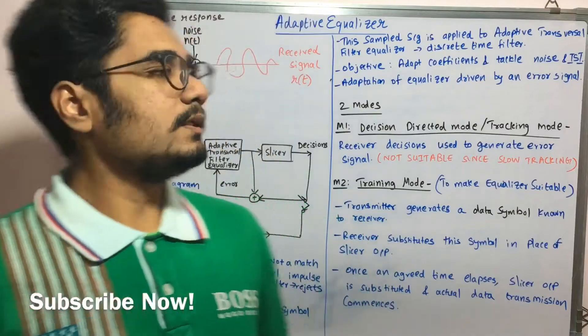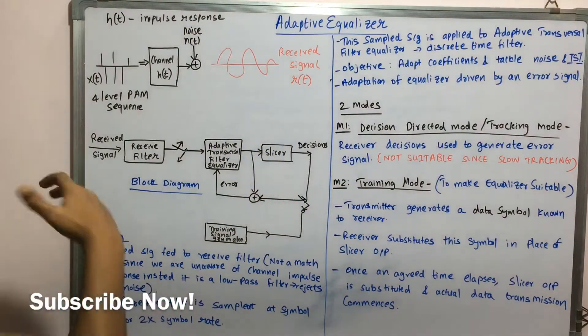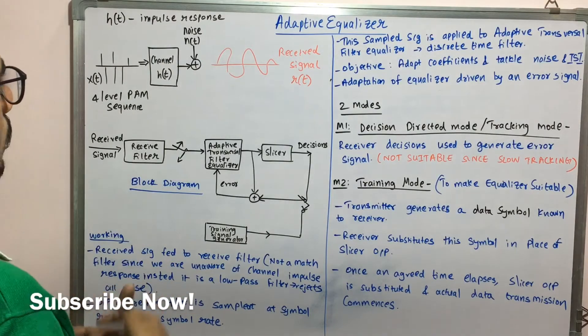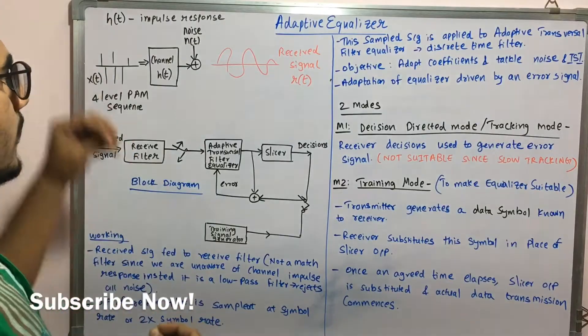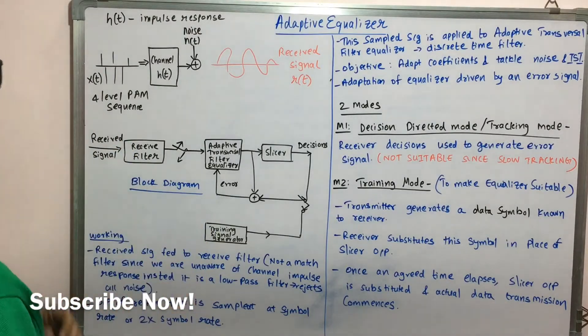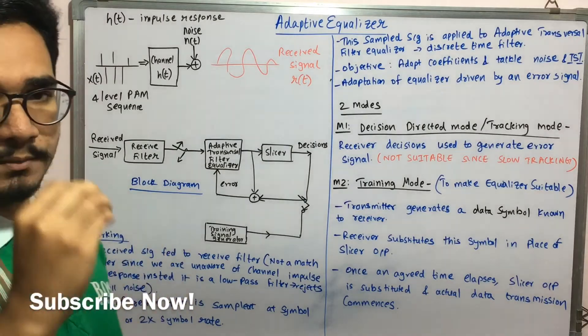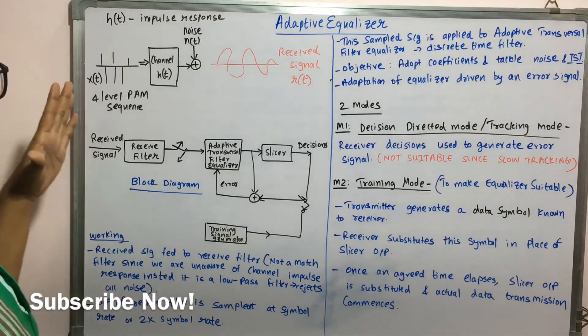So these equalizers are basically functioned in this block diagram. So before that, let us understand how this noise gets generated or how this additive noise gets added into the signal. So basically, if we have a four level pulse amplitude modulation sequence, so it's a proper signal. So it is XT.